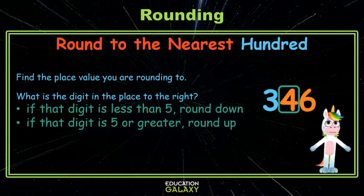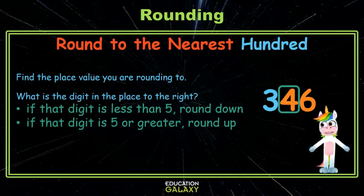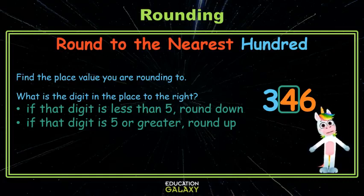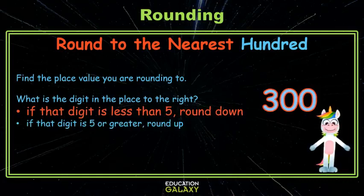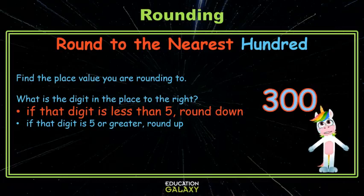The digit is less than 5, so we'll round down. Do you know what the 100 is that comes before 346? Of course you do — it's 300. Okay, let's try one more example.